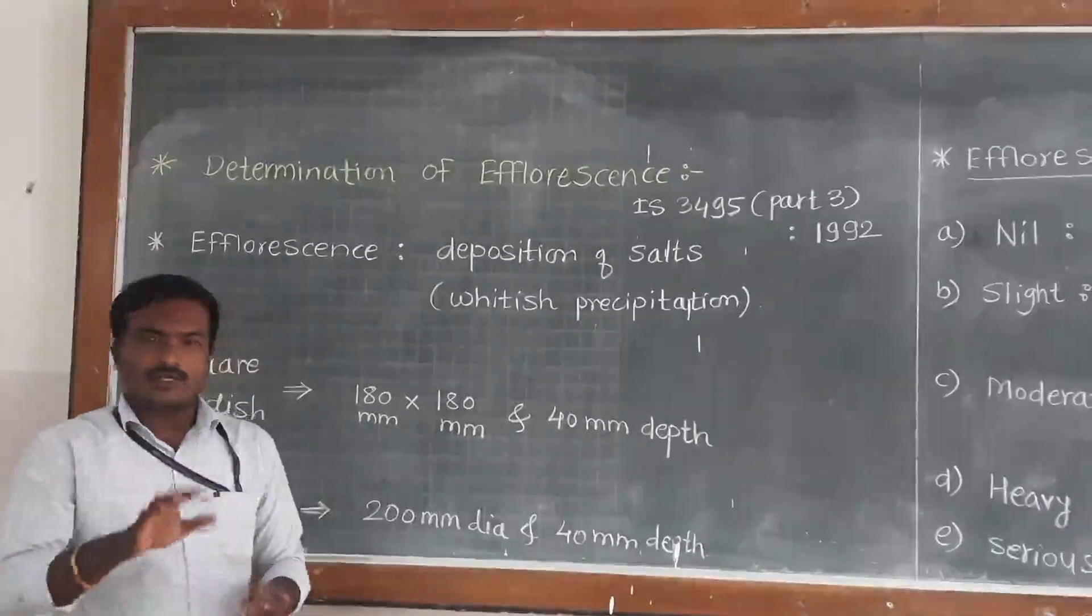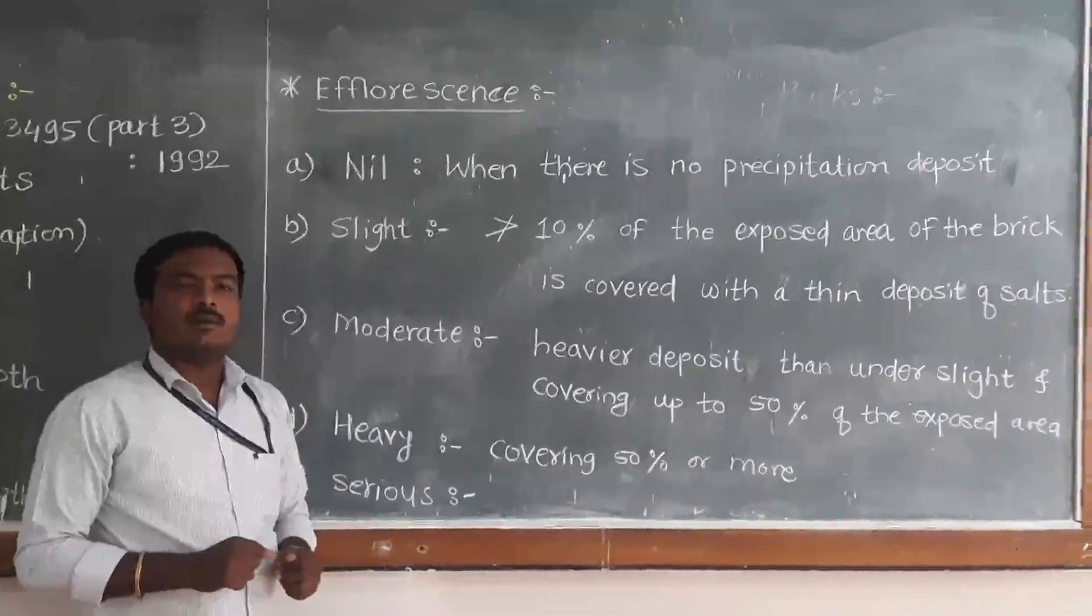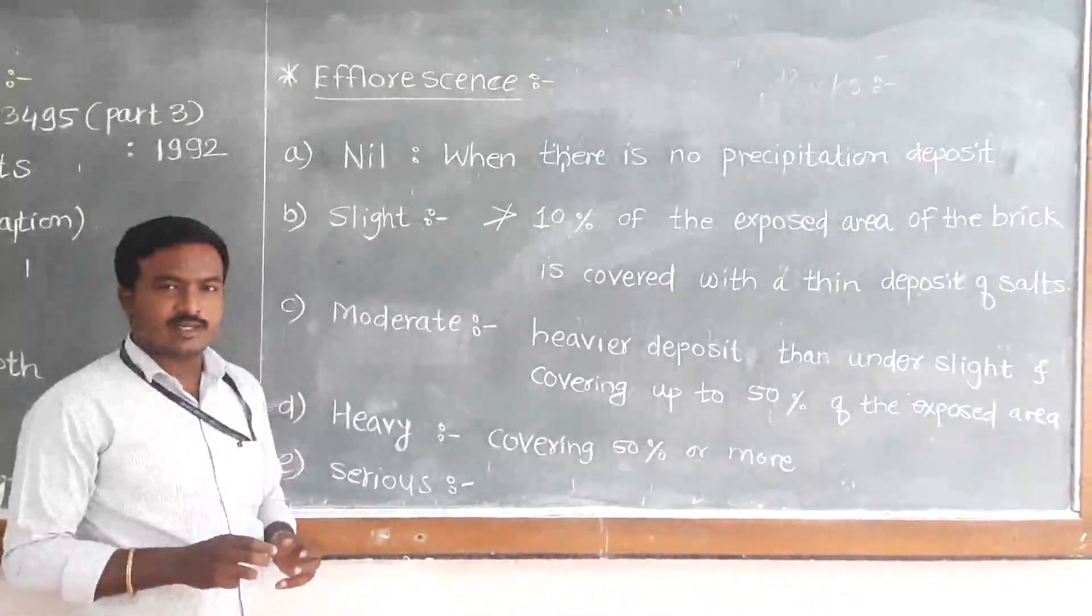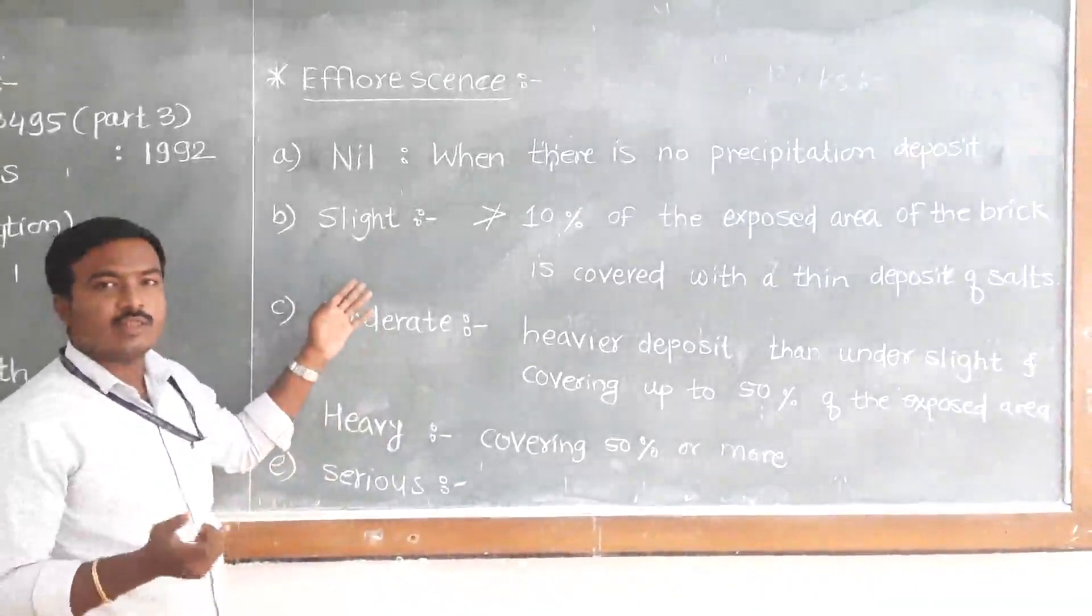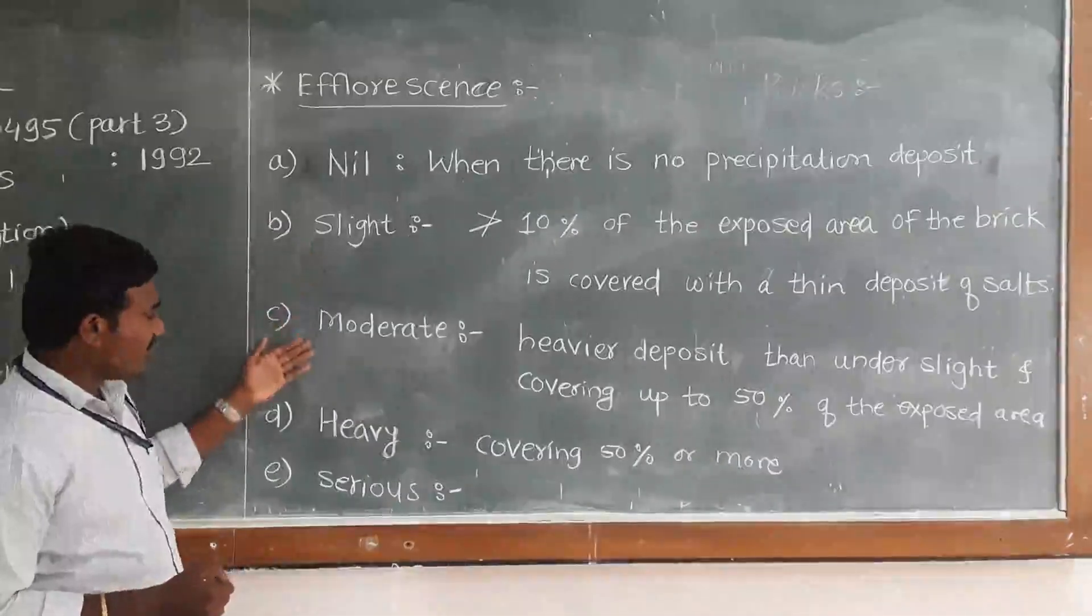After that, by observation, we have to categorize the efflorescence on that brick as nil, slight, moderate, heavy, and serious.